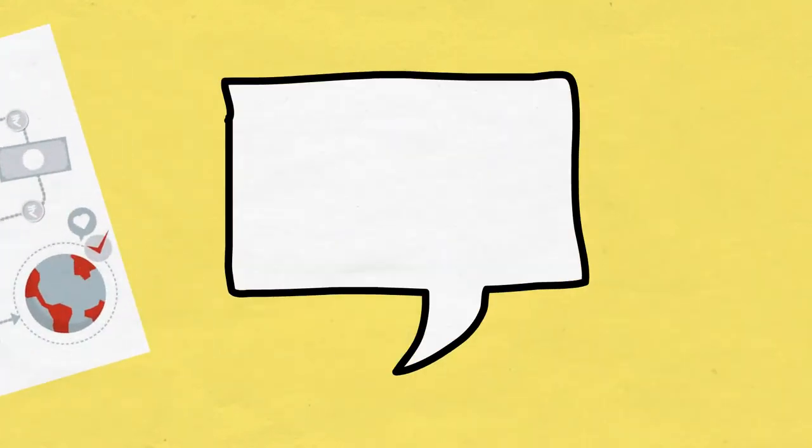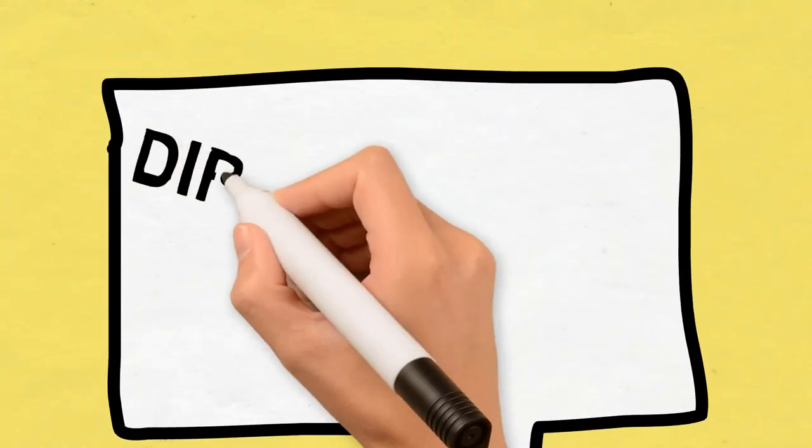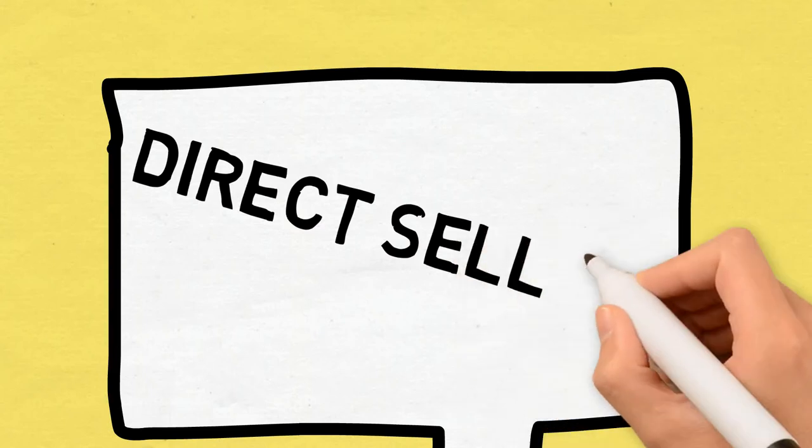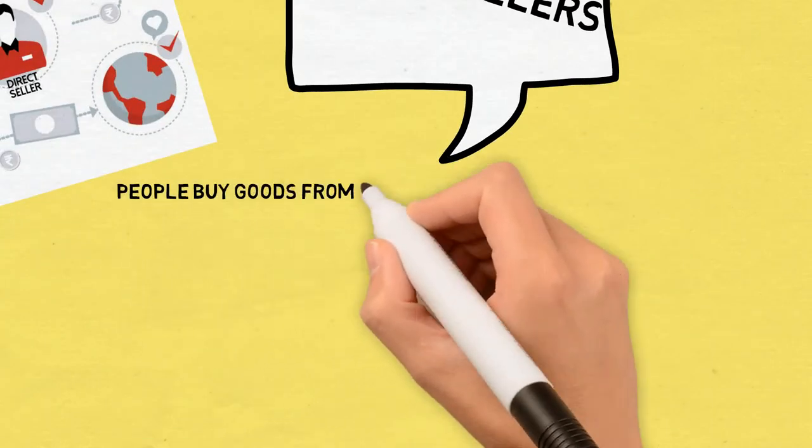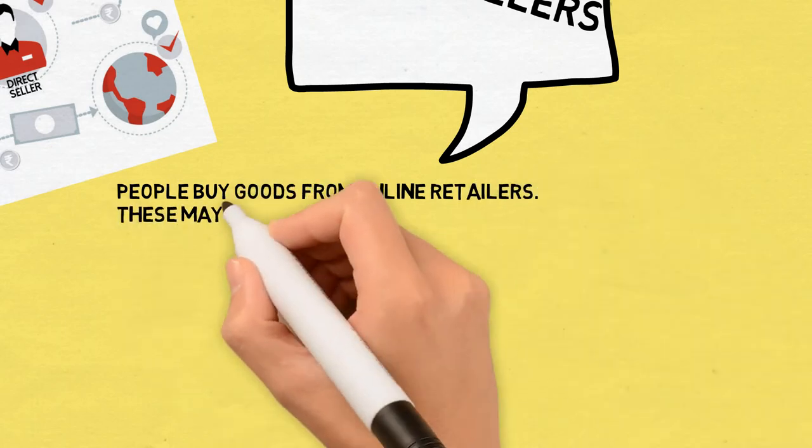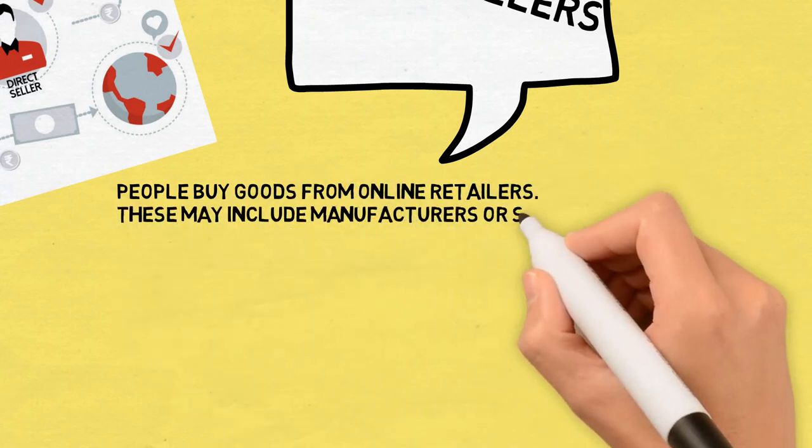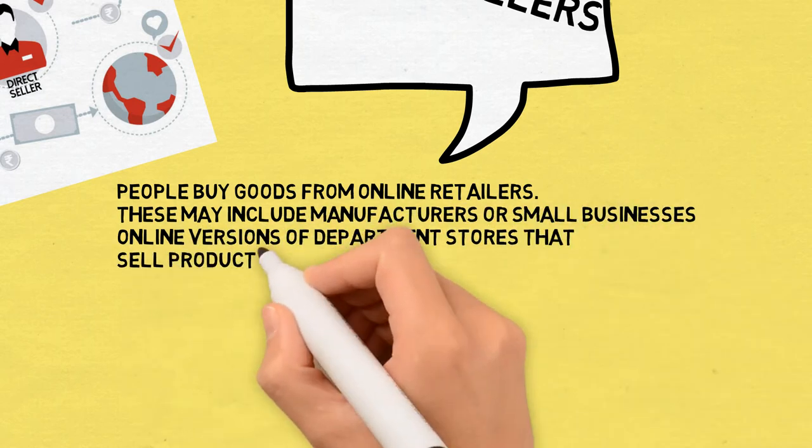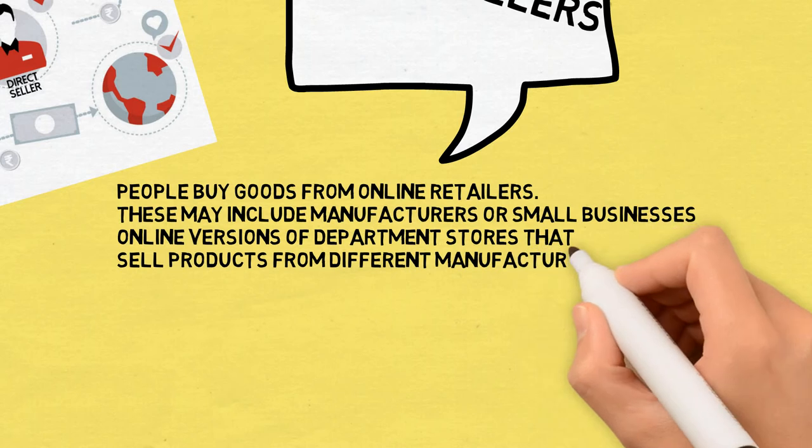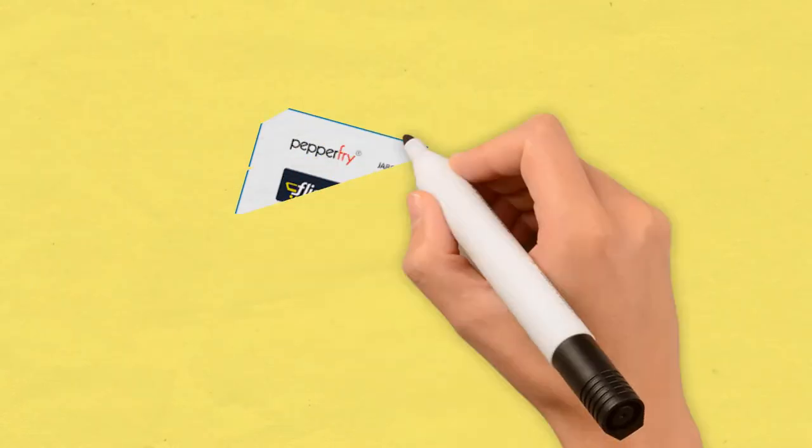Now let us look further at one of the B2C models, which is direct sellers. People buy goods from online retailers. This may include manufacturers or small businesses, or online versions of department stores that sell products from different manufacturers.